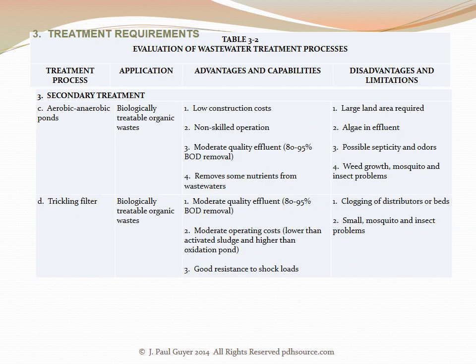The next secondary treatment is aerobic/anaerobic ponds. Aerobic is a biological process that takes place in the presence of oxygen; an anaerobic process is one that takes place in the absence of oxygen. The applicability is to biologically treatable organic wastes. The advantages and capabilities are low construction cost, non-skilled operation, moderate quality effluent of 80 to 95% BOD removal, and removal of some nutrients from wastewaters. The disadvantages and limitations are the large land area required, algae that may be produced in the effluent, possible septicity and odors, and weed growth, mosquitoes, and insect problems.